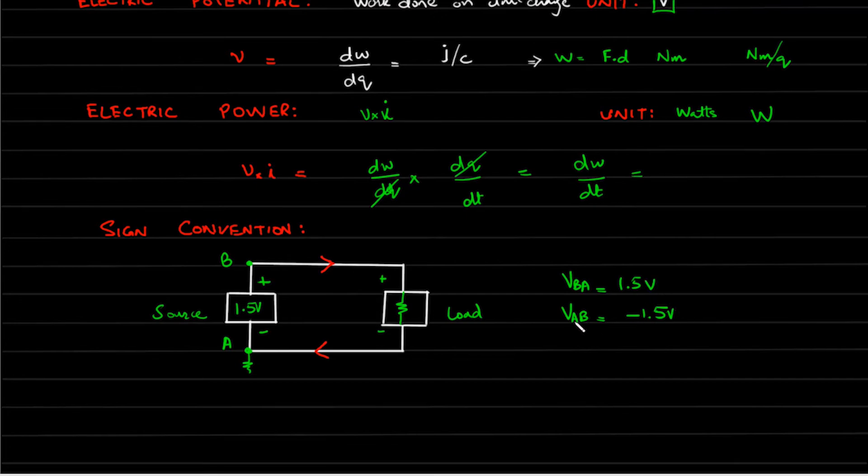So VAB that will be having negative 1.5 volts. Now let's assume what we have done. Now this is not our reference. This B is our reference. So for this diagram VAB is minus 1.5 volt. So this was a sign convention.